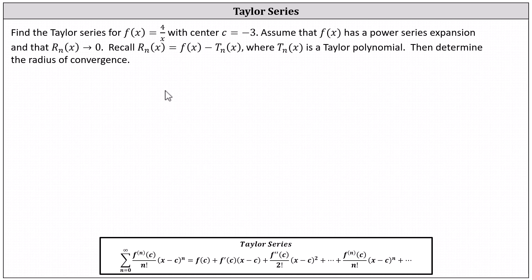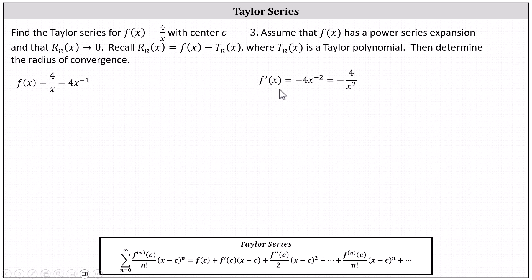Starting with the original function, let's determine the first three derivatives. Beginning with the given function, f(x) equals four divided by x, or four times x to the power of negative one. f prime of x equals negative four times x to the power of negative two, or negative four divided by x squared. f double prime of x equals the derivative of negative four x to the power of negative two, which is eight times x to the power of negative three, or eight divided by x cubed.